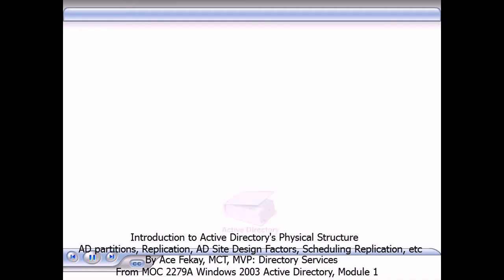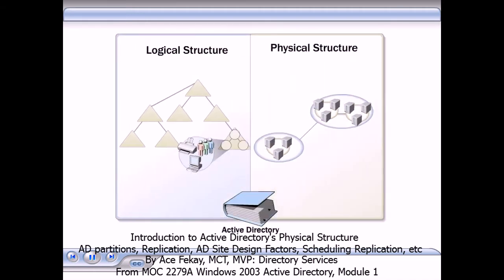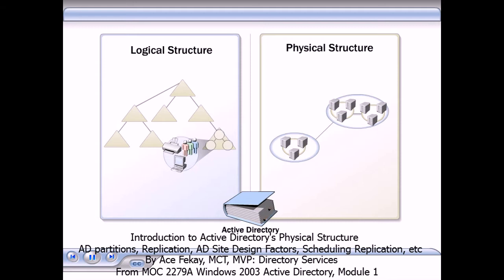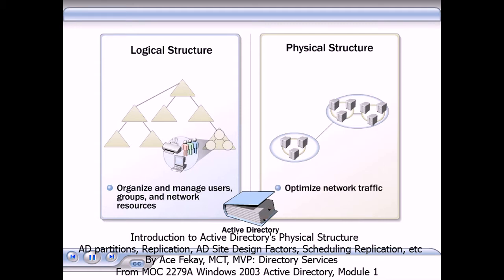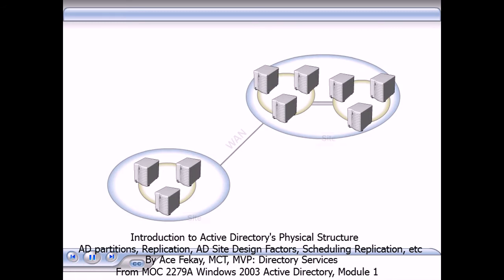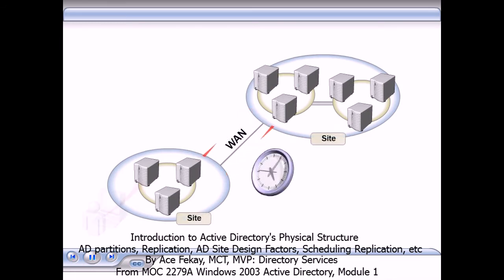In Active Directory, the physical structure is separate and distinct from the logical structure. The logical structure enables you to organize and manage users, groups, and network resources. The physical structure enables you to optimize network traffic. The physical structure of Active Directory defines when and where replication and logon traffic occur.